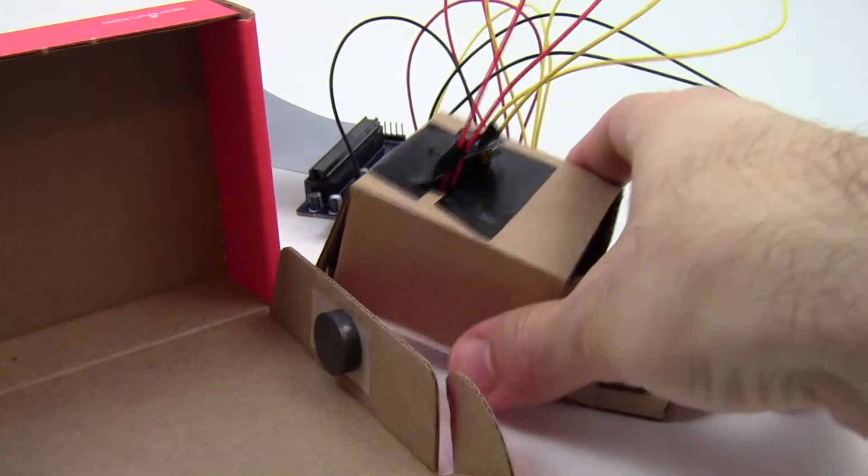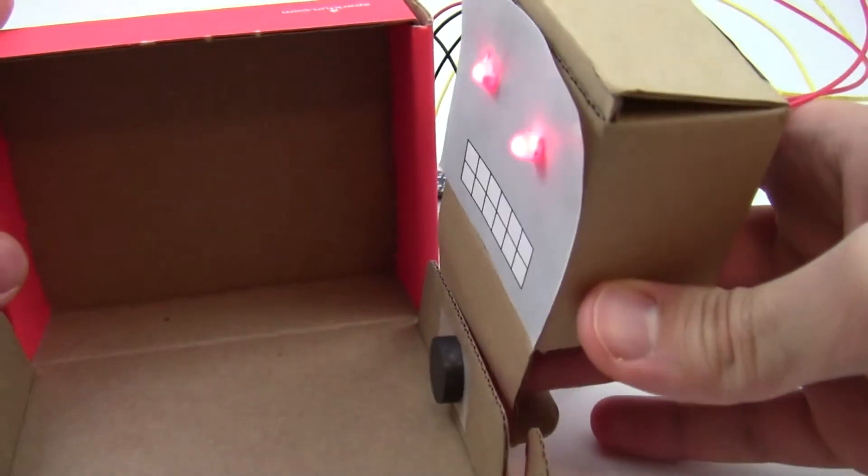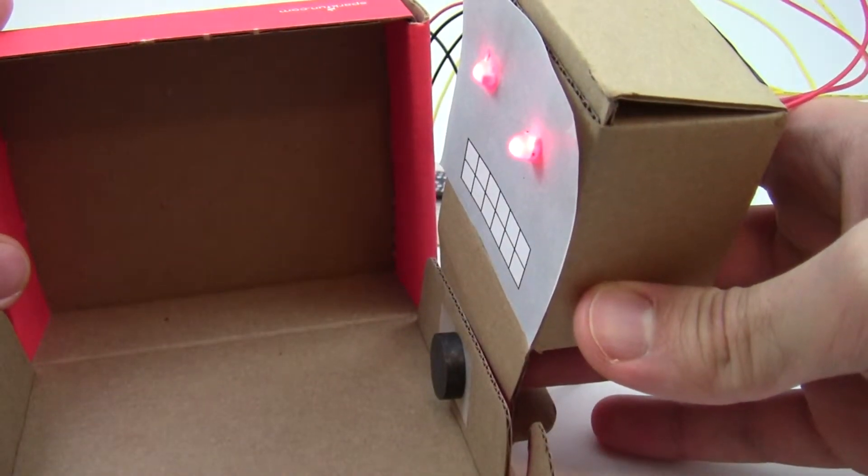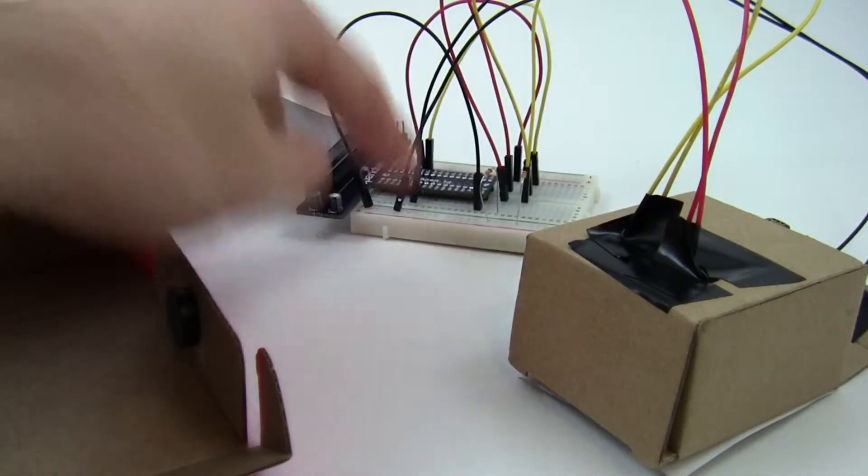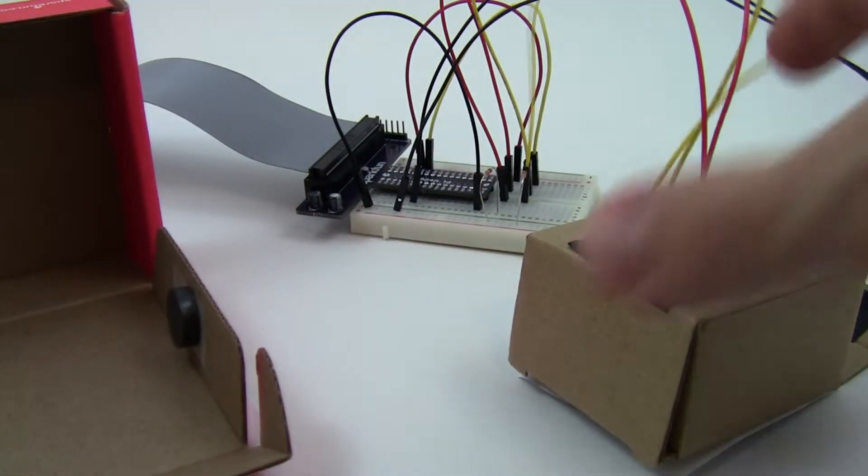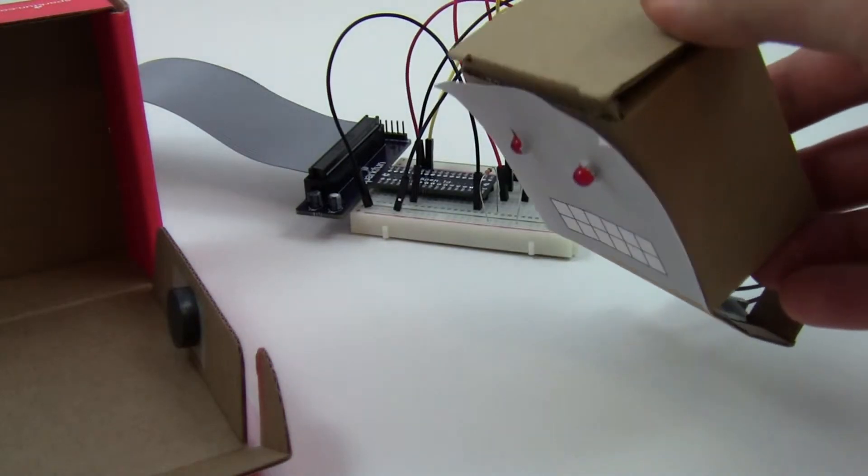When I hold those two close together, it closes a circuit that activates the GPIO pin that is then read by your code to tell it to light up the LEDs and play a sound.